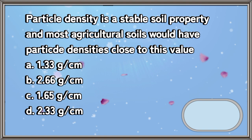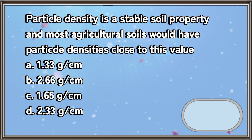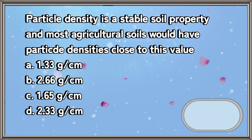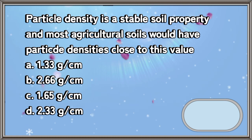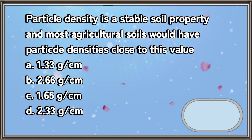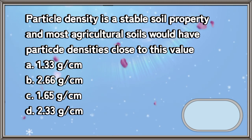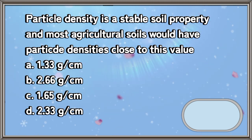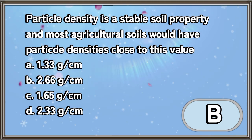Particle density is a stable soil property and most agricultural soils would have particle densities close to this value. A. 1.33 grams per centimeter. B. 2.66 grams per centimeter. C. 1.65 grams per centimeter. D. 2.33 grams per centimeter. The answer is letter B.